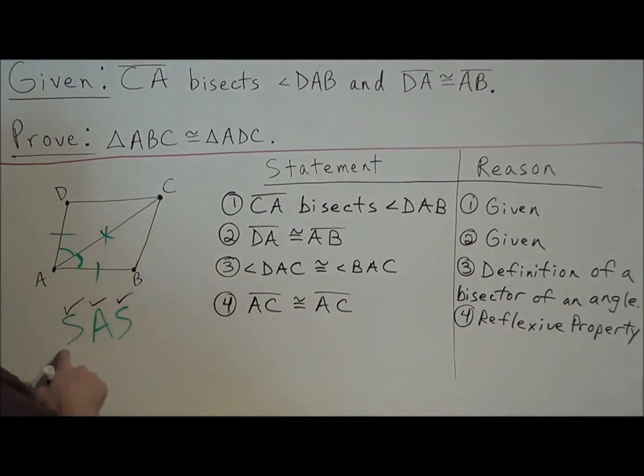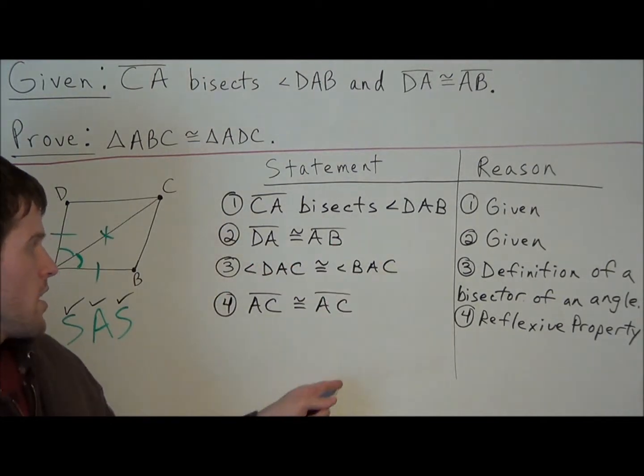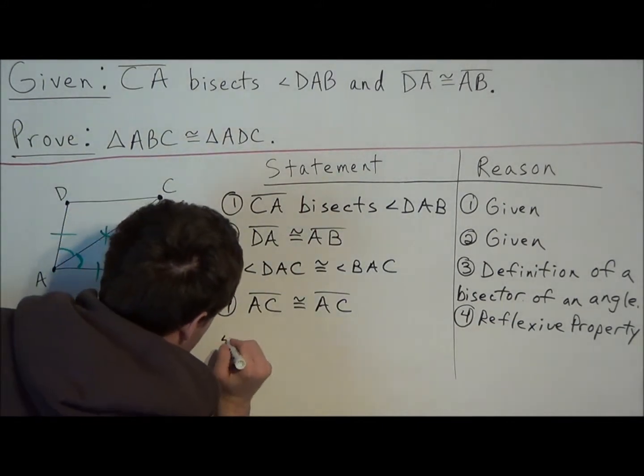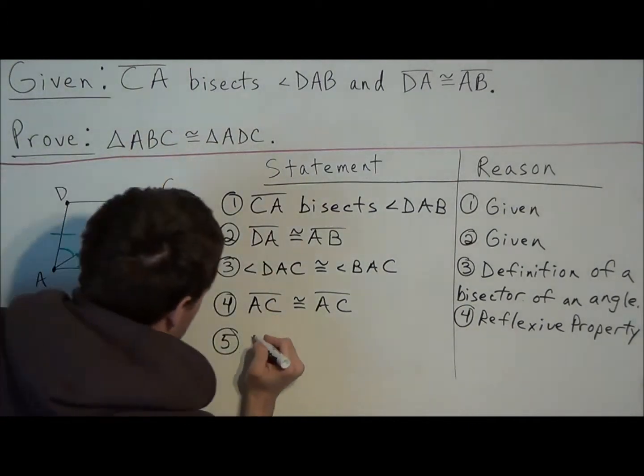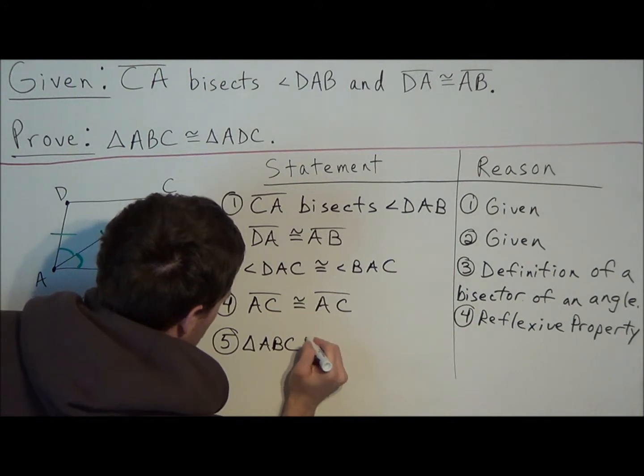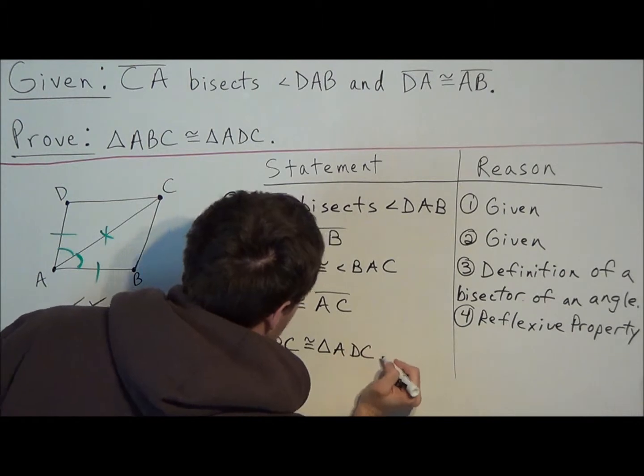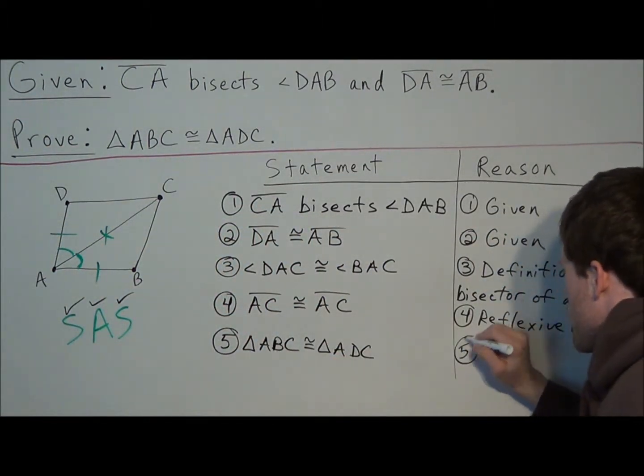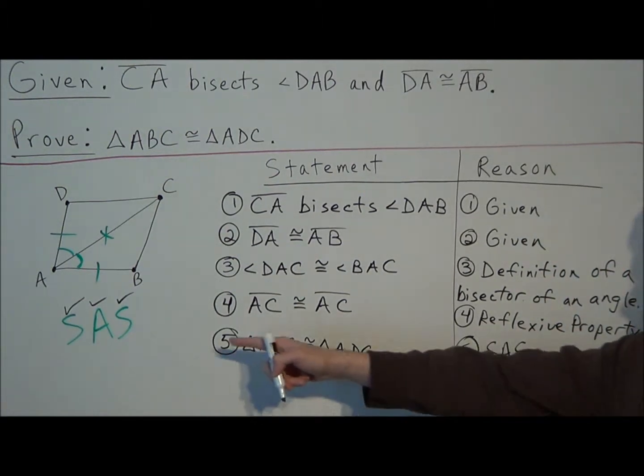So we go over to our postulate. And notice we've checked off the side, the angle, and the side. We've established three lines of congruence that we need to finish this proof. And remember, the last thing you write in every proof is the statement that you're trying to prove. So now we could say that triangle ABC is congruent to triangle ADC. And the reason, we knew this before we wrote anything, but our last reason, we could write side angle side. And we could abbreviate this with SAS.